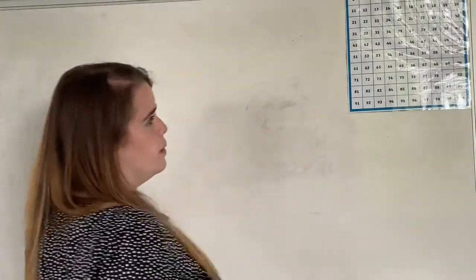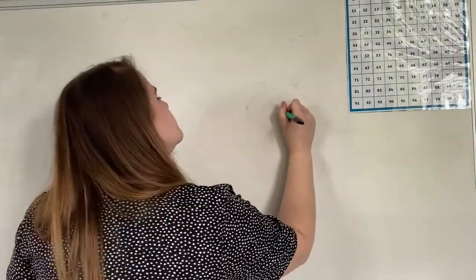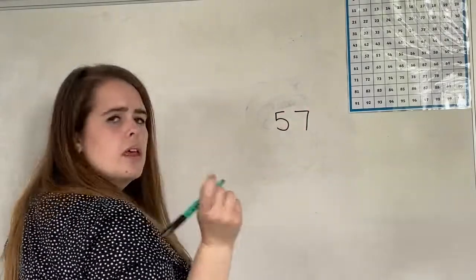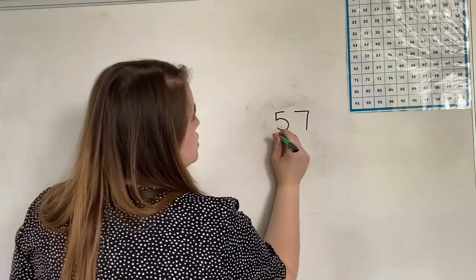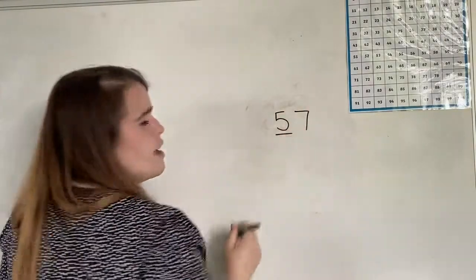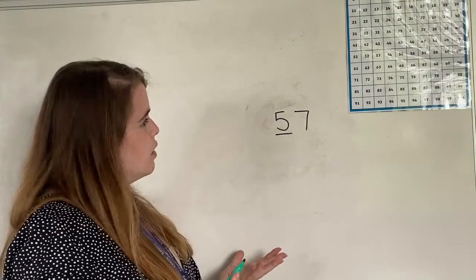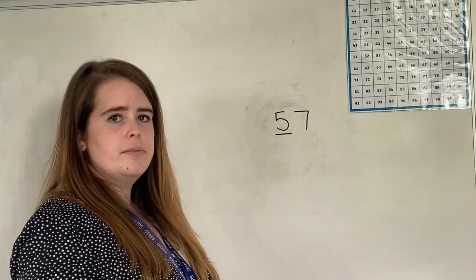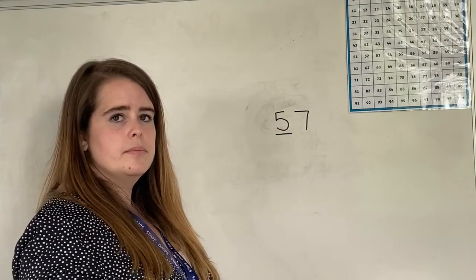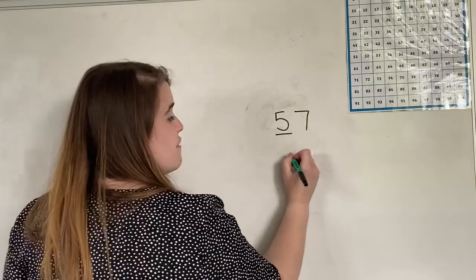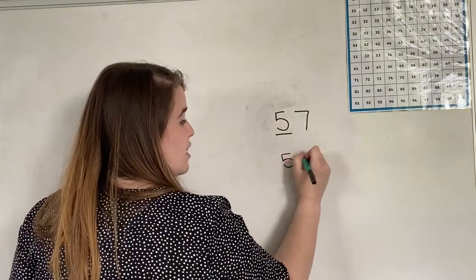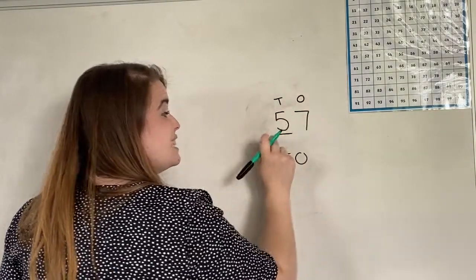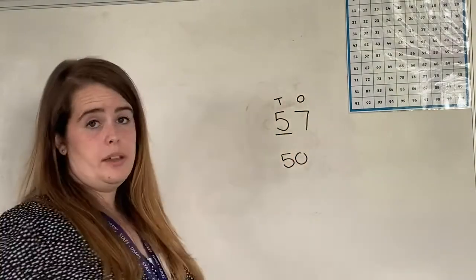Let's try another one. Fifty-seven. If I was to underline the 5 this time, what's the value of the 5? The value is 50 this time because the 5 is in the tens column.